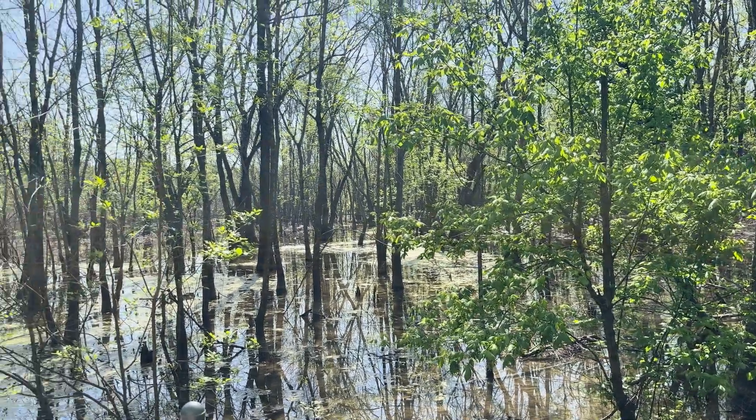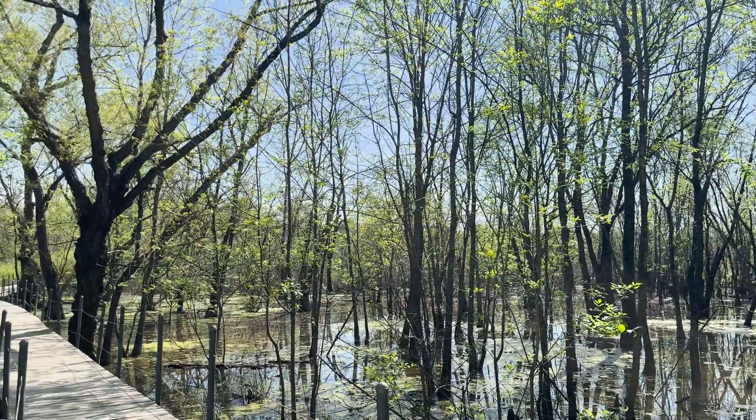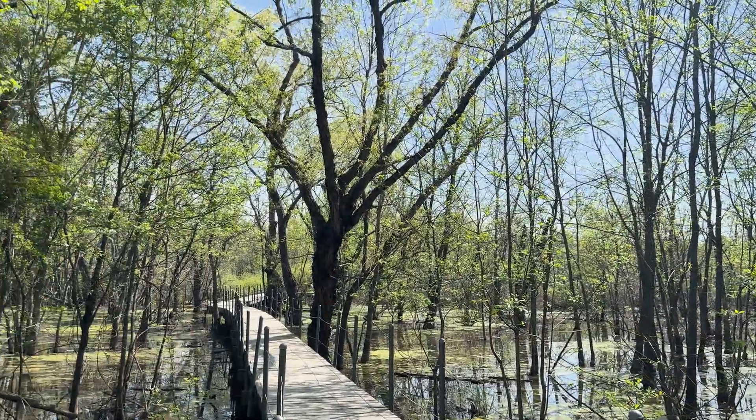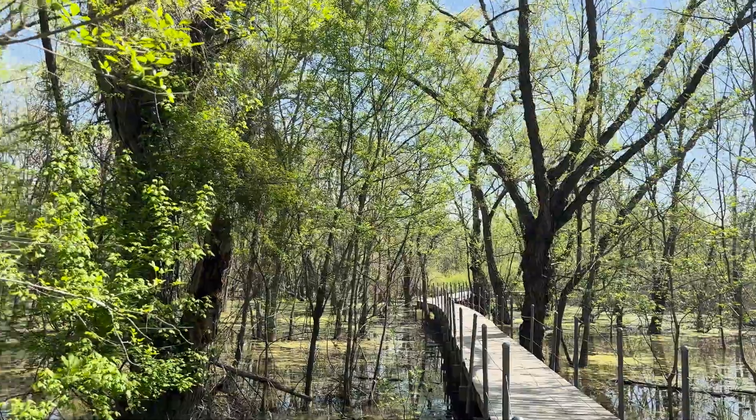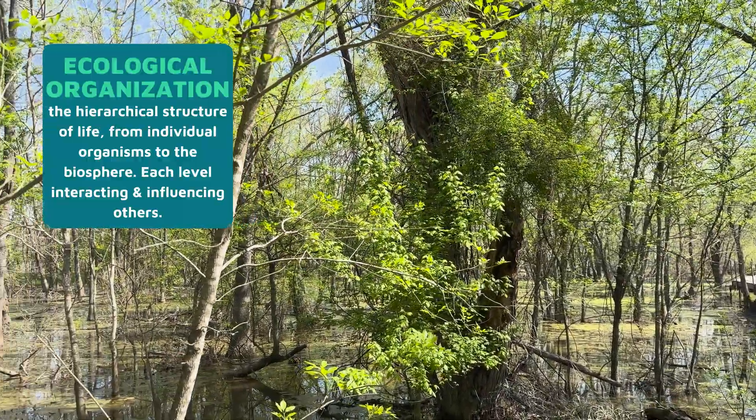Life in an ecosystem is full of order. It's organized in layers, each one both complex and connected. We call those layers the levels of ecological organization. These layers include the individual living organism all the way to the entirety of all living things on our planet, and understanding this organization is important to understanding how all living things are connected on Earth.